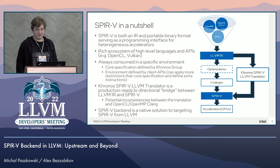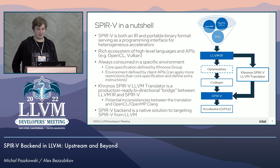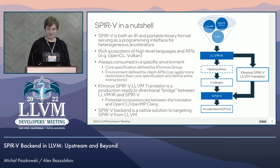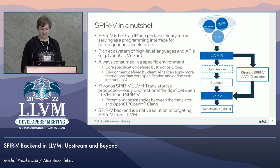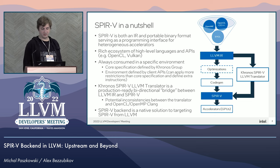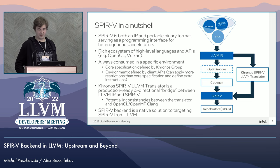Vendors usually introduce their own extensions for functionality they consider missing in the core specification. In the LLVM ecosystem, SPIR-V is produced by the Khronos SPIR-V to LLVM translator, which is a tool formally external to the LLVM project. That may result in potential inconsistencies between what Clang produces and what the translator actually expects. So we want to solve this problem with a native LLVM backend targeting SPIR-V.